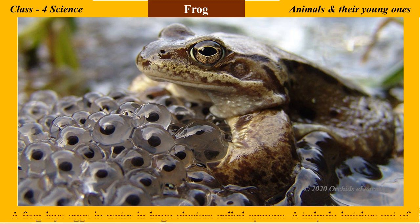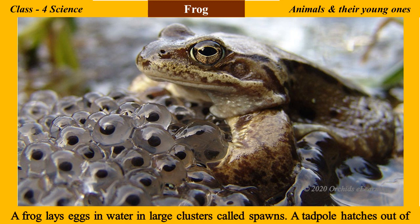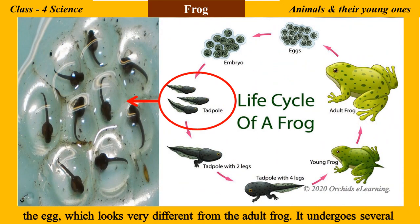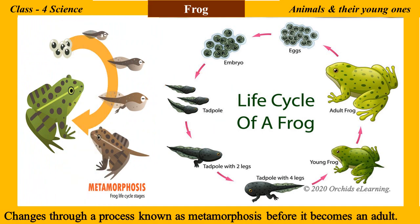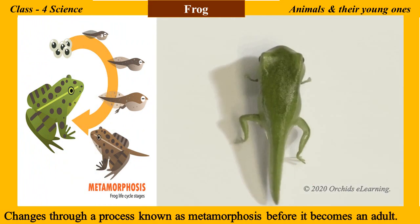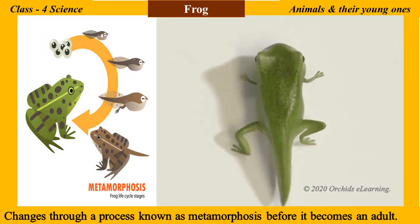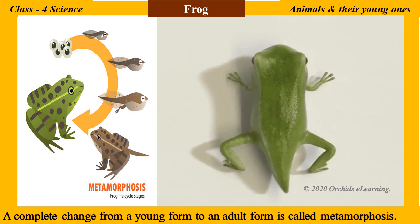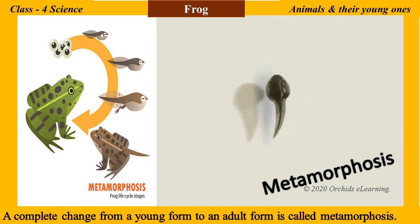A frog lays eggs in water in large clusters called spawns. A tadpole hatches out of the egg, which looks very different from the adult frog. It undergoes several changes through a process known as metamorphosis before it becomes an adult. A complete change from a young form to an adult form is called metamorphosis.